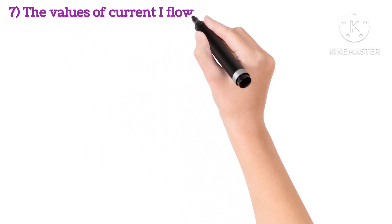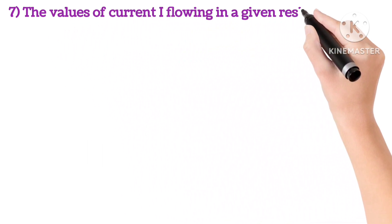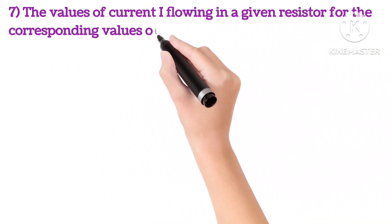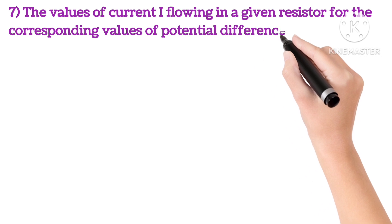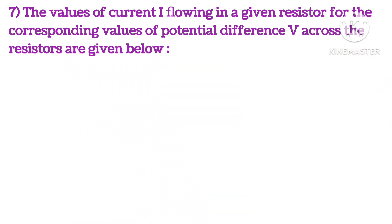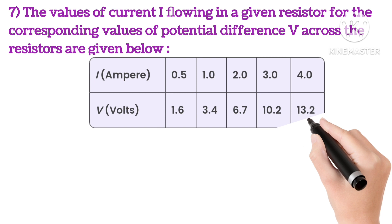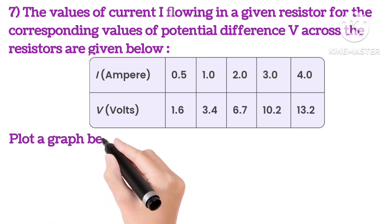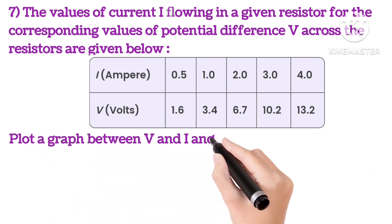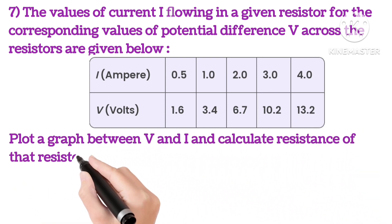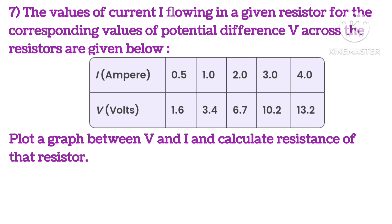Seventh: the values of current I flowing in the given resistor for corresponding values of potential difference V across the resistors are given below. Plot a graph between V and I and calculate resistance of that resistor.